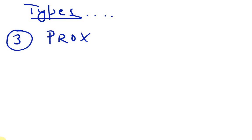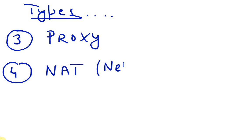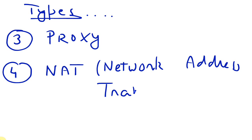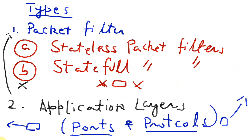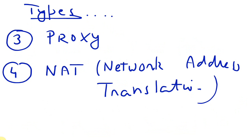If the ports and protocols are allowed, application layer filters will allow the packet to either enter into our system or network, or go out to the internet. The third type of firewalls are called proxy servers or proxy firewalls, and the fourth type are called NAT firewalls or network address translation firewalls. Some people say there is another kind called next-generation firewalls, but they are just a newer version of application layer firewalls that do deep packet inspection.